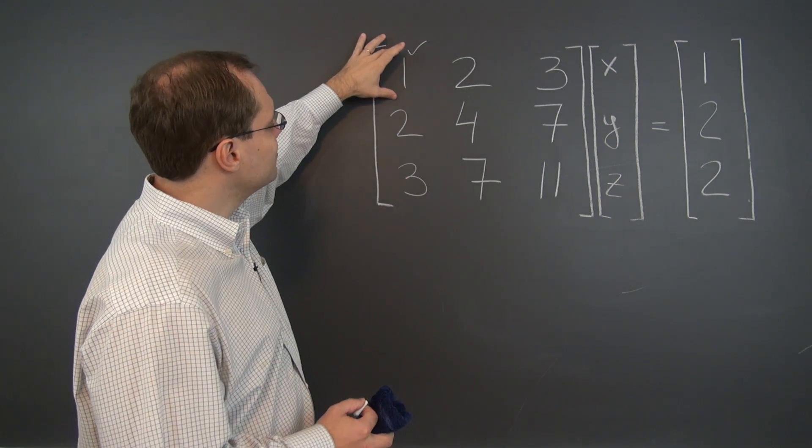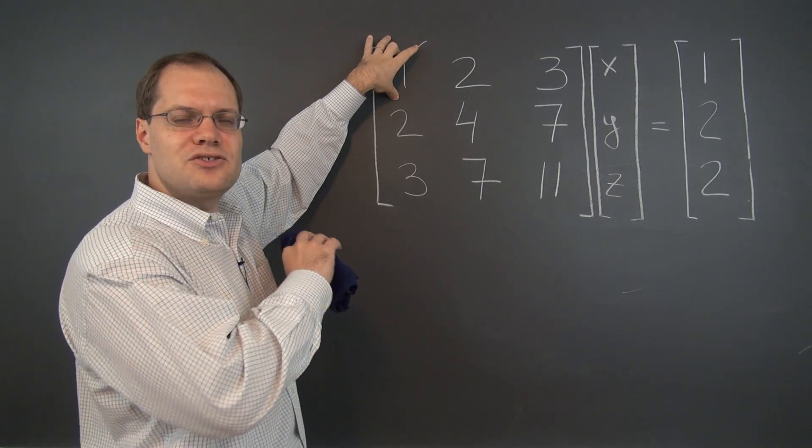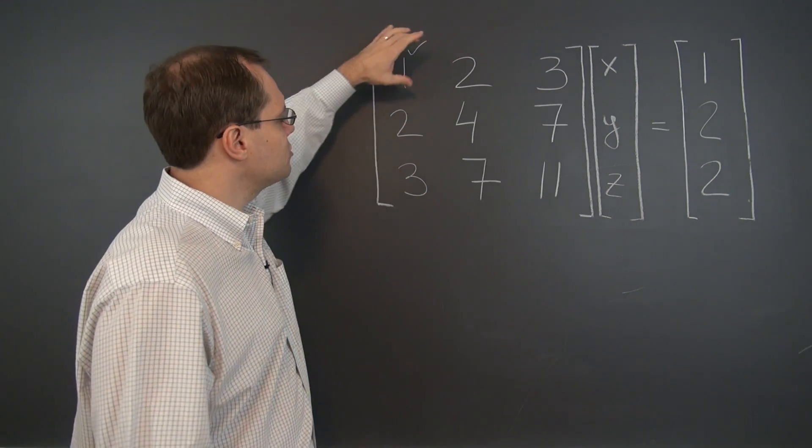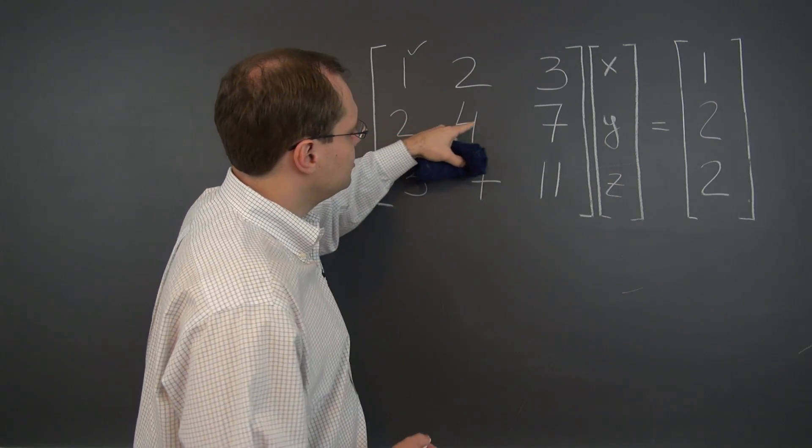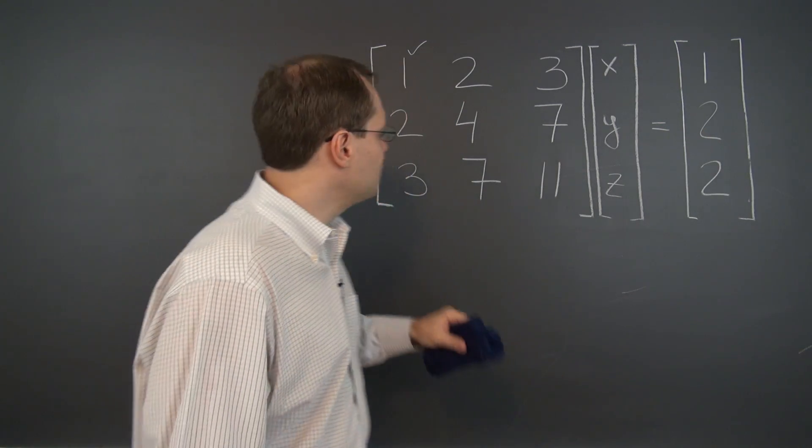So in this case the multiple is of course two, or minus two if you want to discuss everything strictly in terms of addition. But we'll use the word subtract, so we're going to subtract two of the first row from the second giving us zero, zero, one, zero, zero, zero, one, zero.